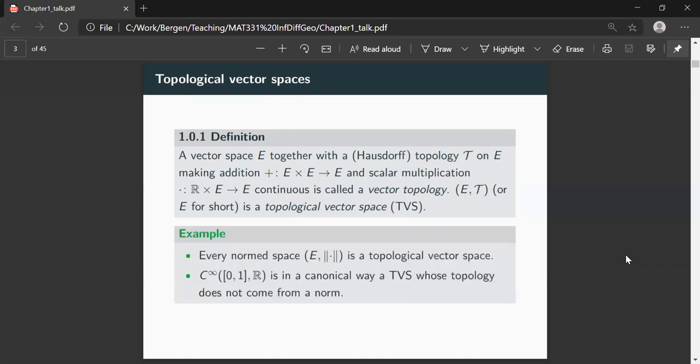So what should be clear is every normed space is a topological vector space. Normed spaces are what I assume most have seen who are attending this course as a standard setting for differentiable mappings. And an example which we very much care about is the set of smooth mappings, C infinity from an interval, say in this case the closed interval from zero to one with values in the reals. And we can topologize this vector space in a canonical way such that it becomes a topological vector space. However, the topology will not come from a norm. So these topological vector spaces, their topology does not necessarily come from a norm. They are more general than normed spaces.